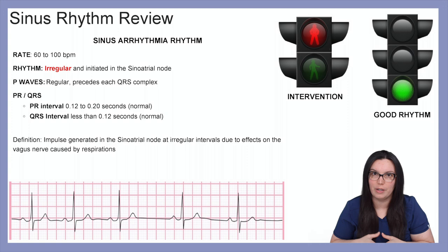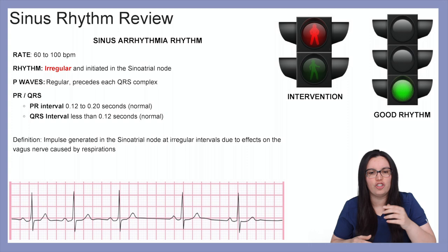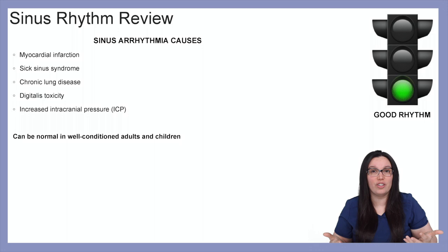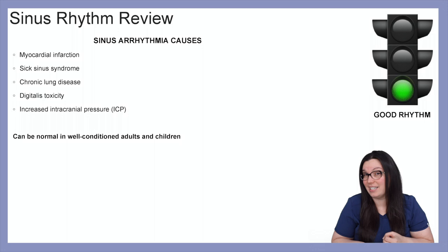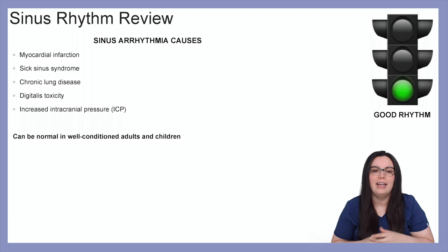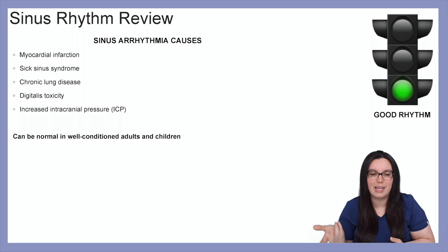The definition of sinus arrhythmia is an impulse that is generated in the sinoatrial node at irregular intervals due to the effects of the vagus nerve caused by respirations. Outside of respiration, other causes include myocardial infarctions, sick sinus syndrome, chronic lung disease — it's a respiratory thing — digitalis toxicity, as well as an increase in intracranial pressure (ICP). Again, this can be normal in well-conditioned adults as well as children.